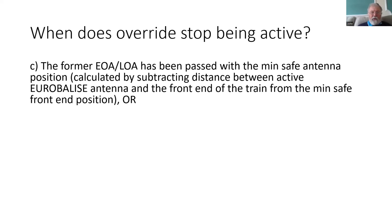Another condition is when the former end of authority has been passed by the Balise antenna. So now we have got to the point where we should have had more information — particularly in level one from a Balise group at the end of authority. This is basically allowing us to go past the end of authority that was previously stored. Once the train has gone past it and is sure it has gone past it, then the override is cancelled, because we want stop in SR messages to remain active.